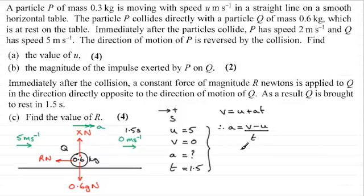And if we substitute our values in, we've got V which is 0 minus U which was 5, all divided by the time T which is 1.5, and we get a negative value. It turns out to be minus 10 thirds. Okay and those units will be meters per second per second.